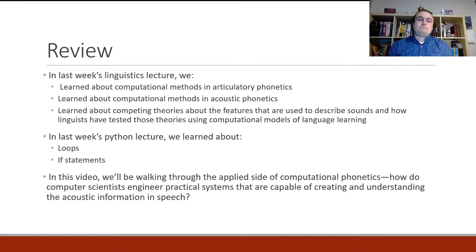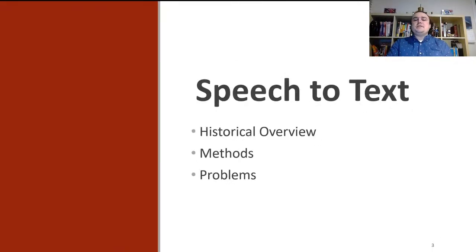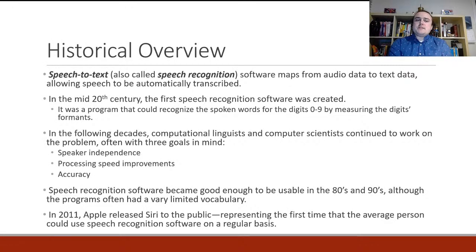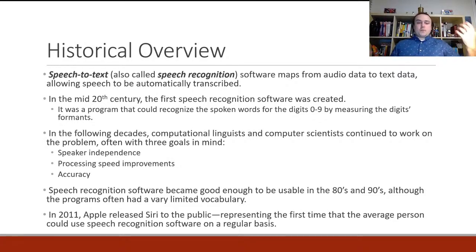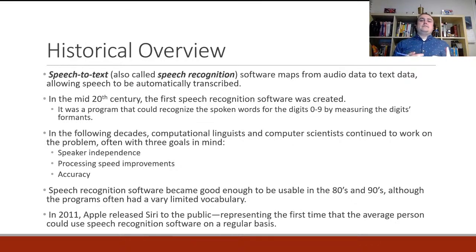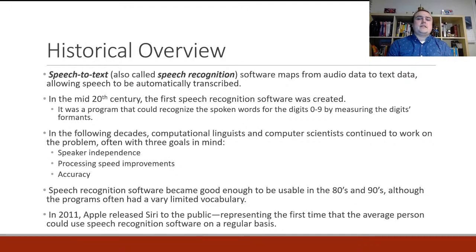Let's first talk about speech-to-text. Speech-to-text, also often called speech recognition, is a kind of software that maps from audio data to text data, allowing speech to be automatically transcribed. Before this technology existed, you had to have people transcribing things — that's still a profession today. There are stenographers who transcribe things happening in real time, like in a courtroom. Software for this task didn't really come around until the mid-20th century.